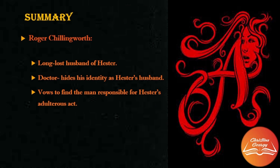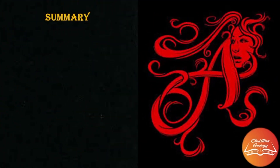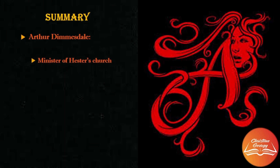Chillingworth vows to find the man responsible for Hester's adulterous act and chooses a new name — Roger Chillingworth — to aid his new plan. He visits Hester in prison and tells her to conceal their relationship. He also threatens her, saying that if she reveals he is her husband, he will kill the child's father. The irony is that Chillingworth doesn't yet know who the real father is. We, however, do know — it is none other than Arthur Dimmesdale, the minister of Hester's church, a young and charismatic personality.